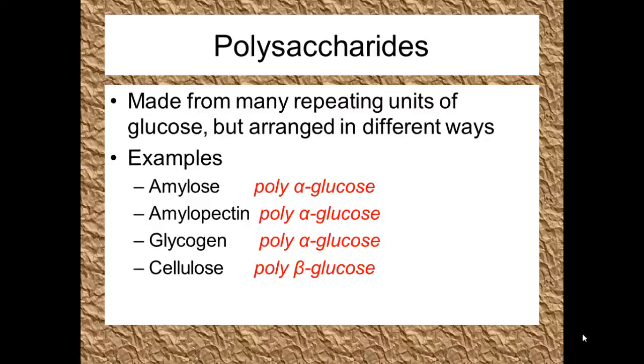At AS Biology for OCR you need to know about four polysaccharides in detail and those polysaccharides are amylose, amylopectin, glycogen and cellulose. All of these are polymers of glucose. Amylose, amylopectin and glycogen are polymers of alpha glucose whereas cellulose is a polymer of beta glucose.